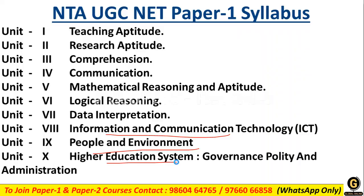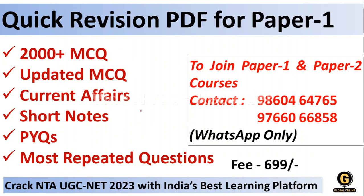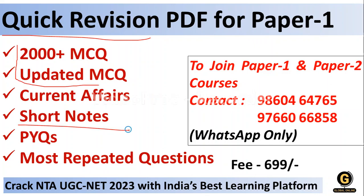In Paper One, if you score more you can easily crack the Assistant Professor examination or JRF. For your preparation, Global Online has come up with a Quick Revision PDF for Paper One. You will get 2000 plus updated current affairs MCQs, short notes on all units, previous year questions, and most repeated questions.